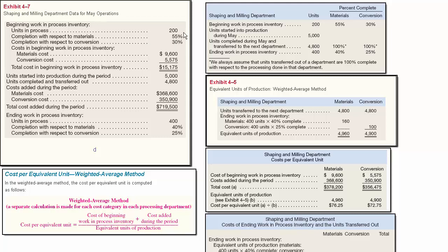With regards to beginning work in process, we had 200 units. They were 55% complete with respect to materials and 30% with respect to conversion costs. The costs in beginning inventory are given here — $9,655.75 for materials, for a total cost of beginning work in process of $15,175. This information has to be given to you.